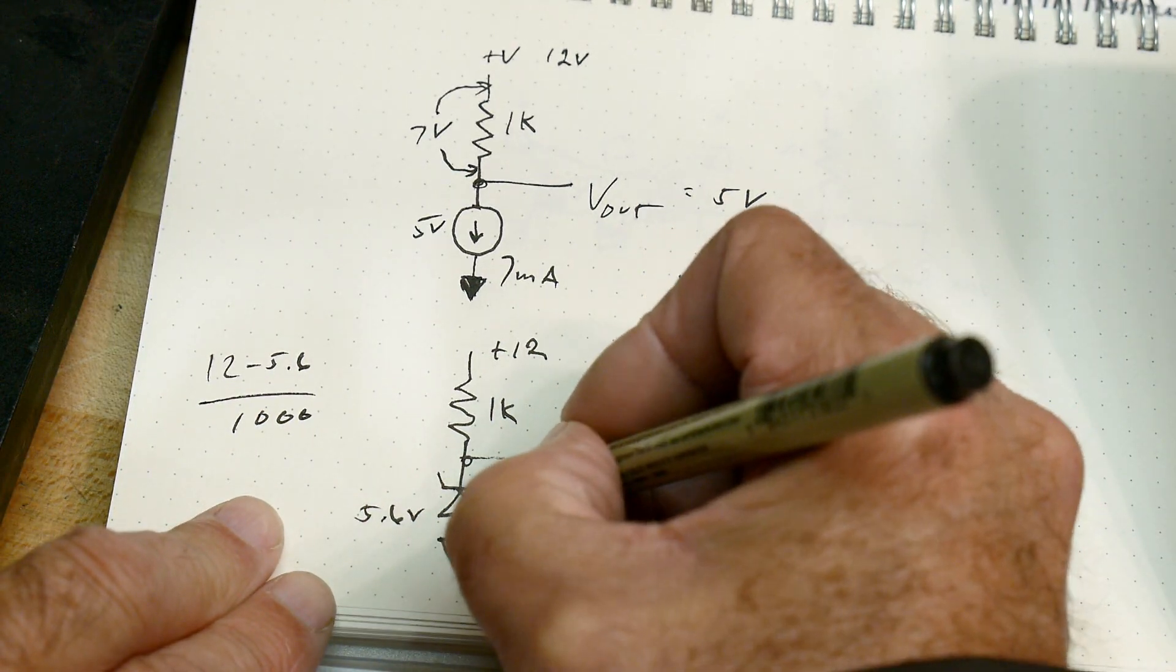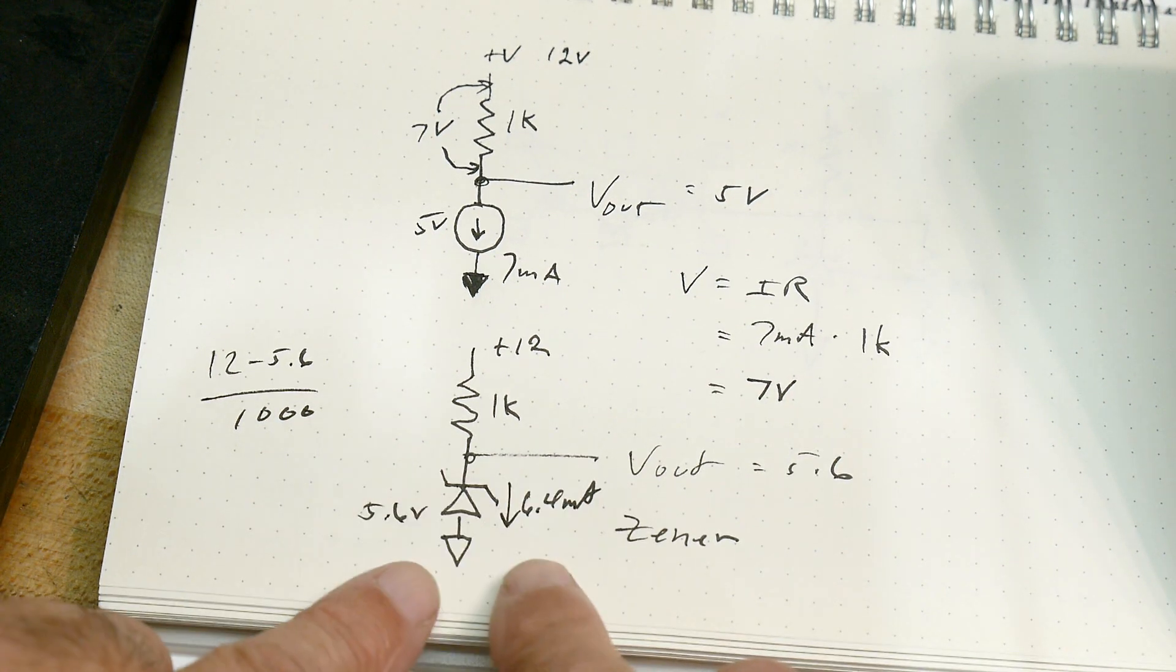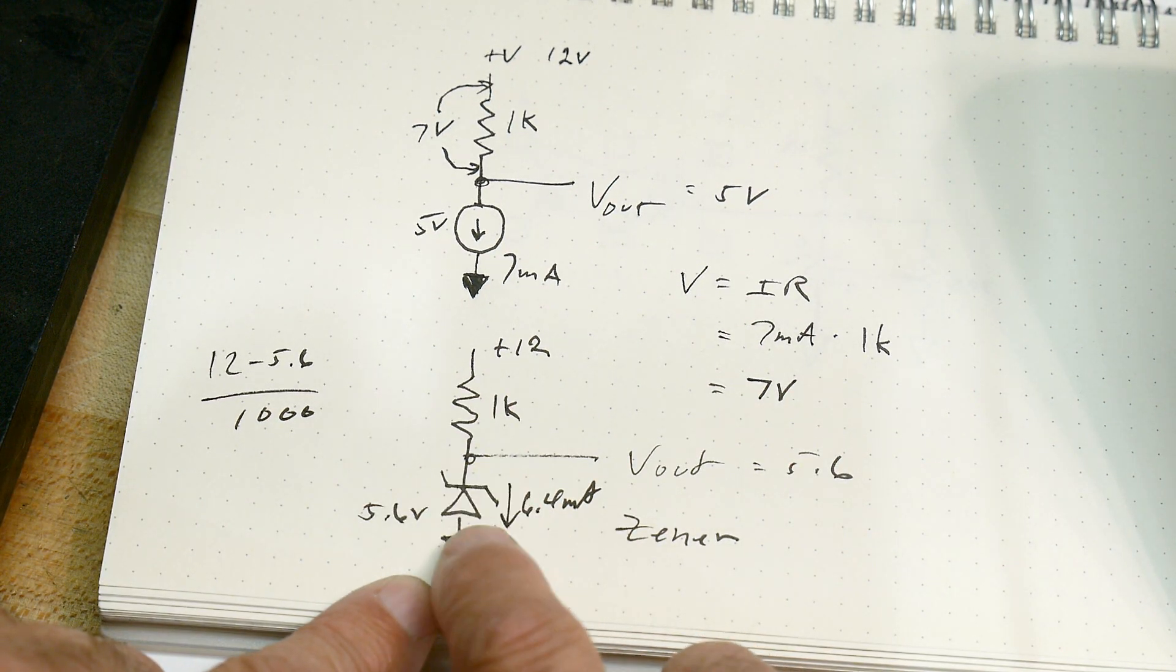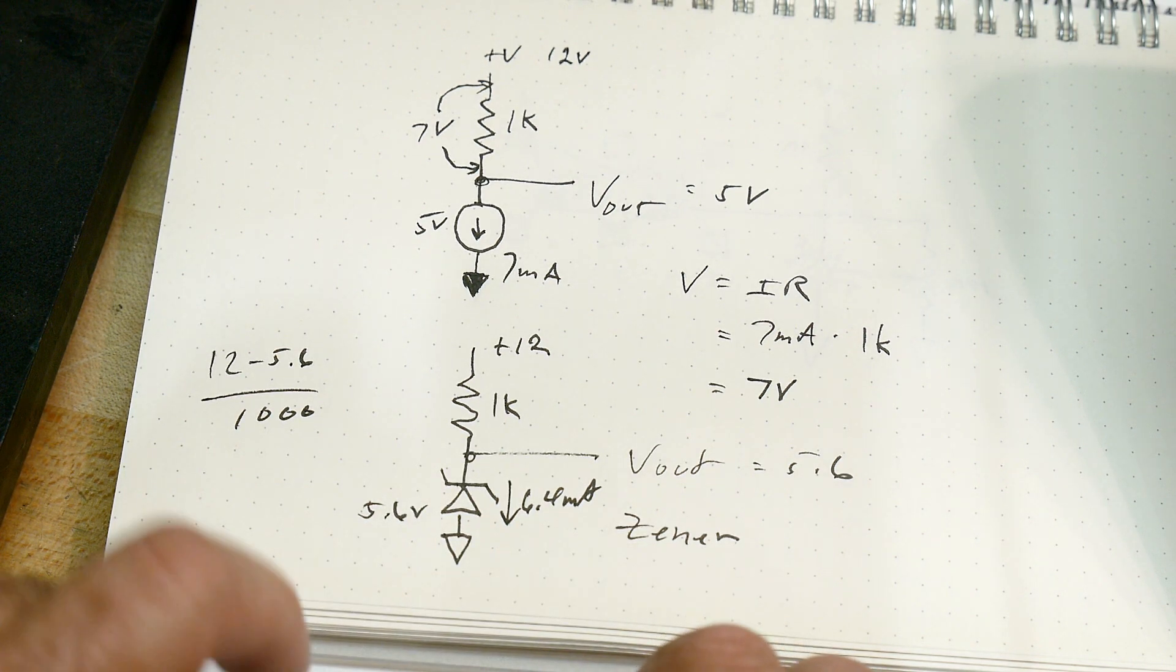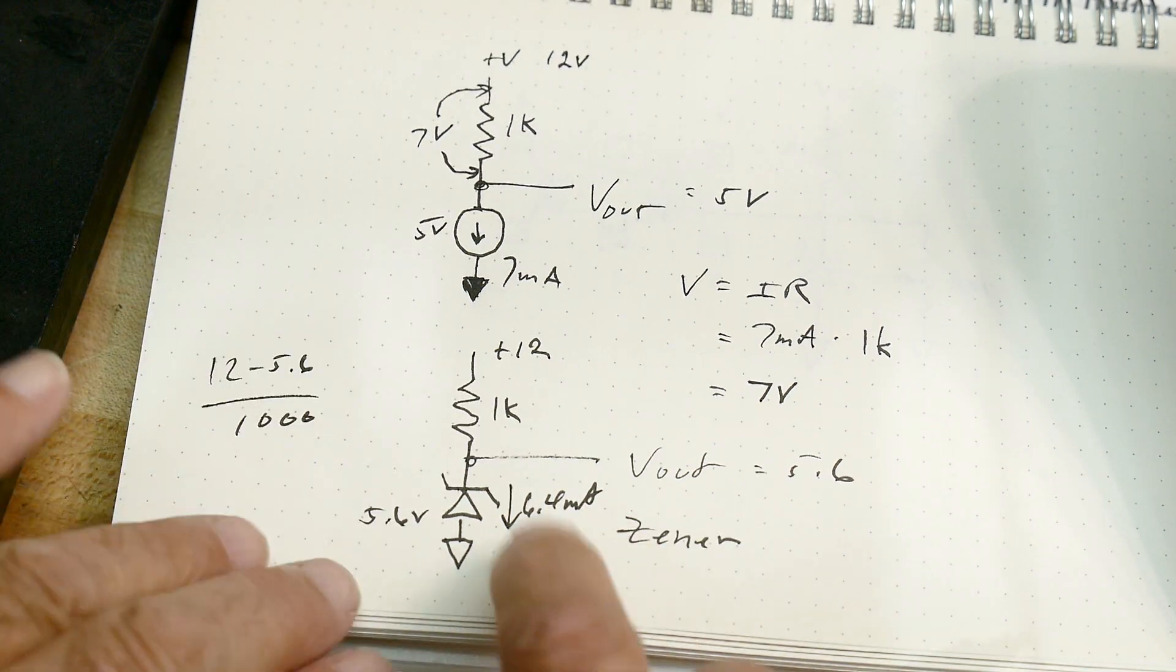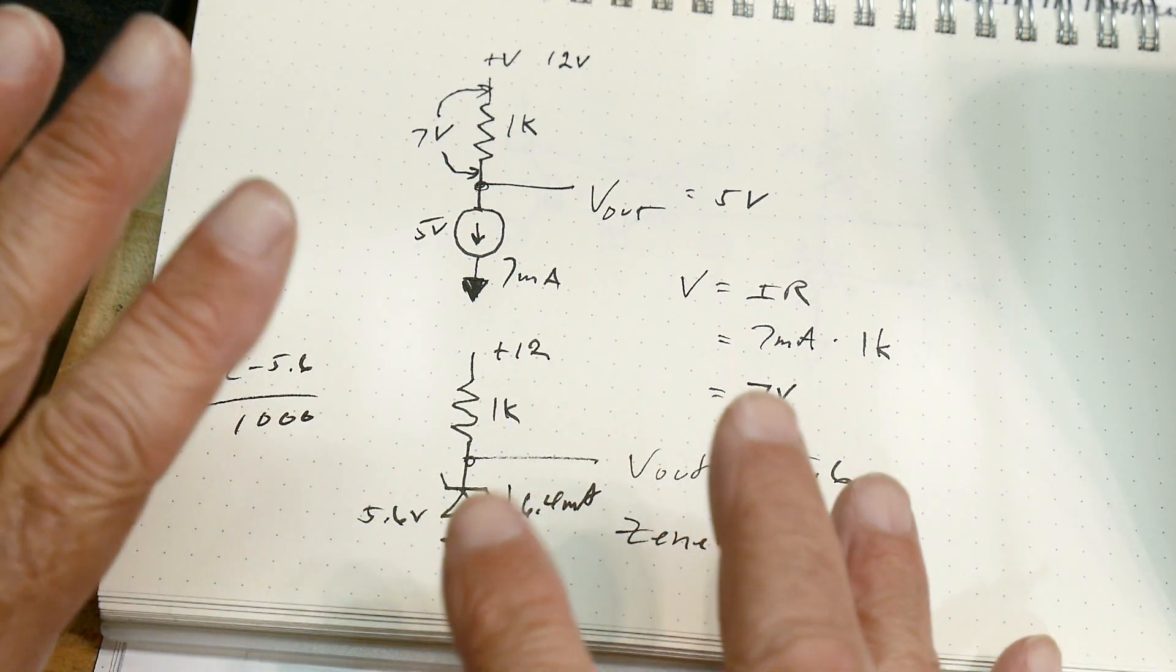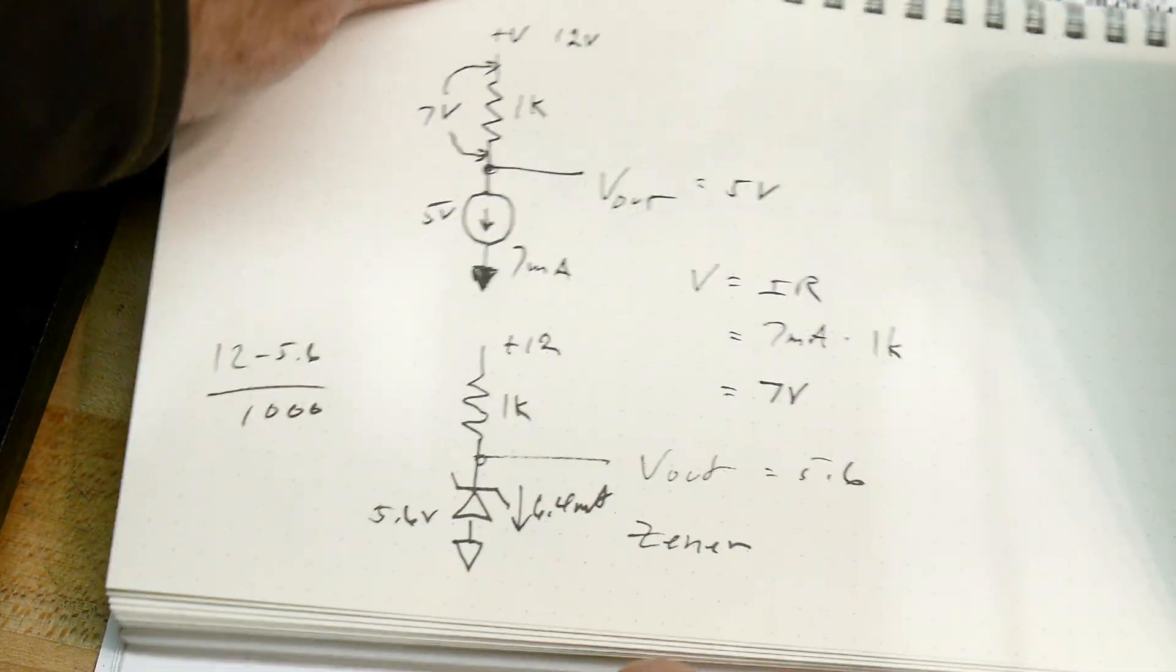We would have 6.4 milliamps. So the zener diode will have 6.4 milliamps flowing through it. So now that we kind of understand currents and voltages and stuff, let's talk about this strange part.